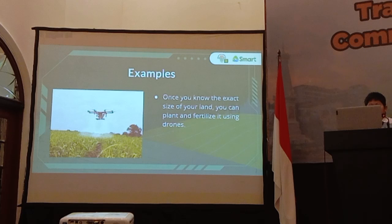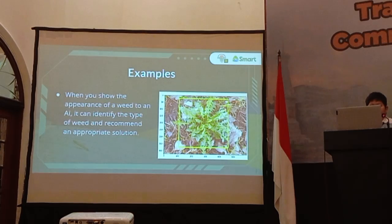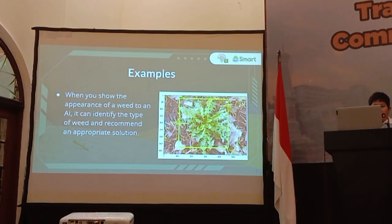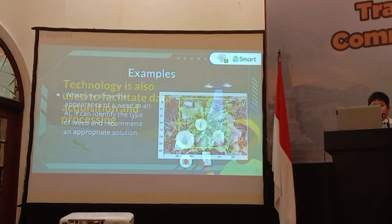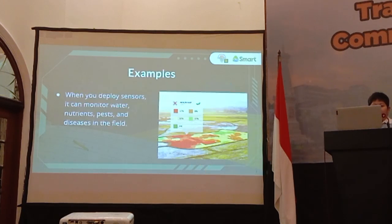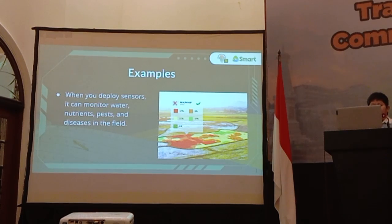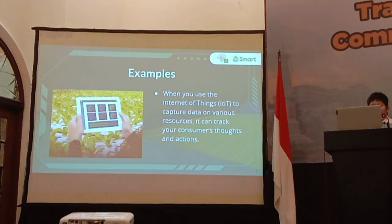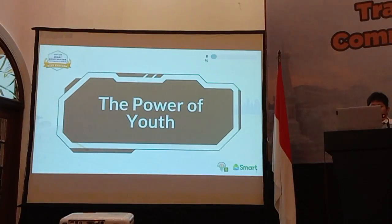Once a farmer knows the exact size of his land, he can plant and fertilize it using drones. When he shows the appearance of a weed to an AI, it can identify the type of weed and recommend an appropriate solution. Technology is also used to facilitate data acquisition and processing. When we deploy sensors, they can monitor water, nutrients, pests, and diseases in the field. Using the Internet of Things to capture data on various resources, it can also track consumer behavior.